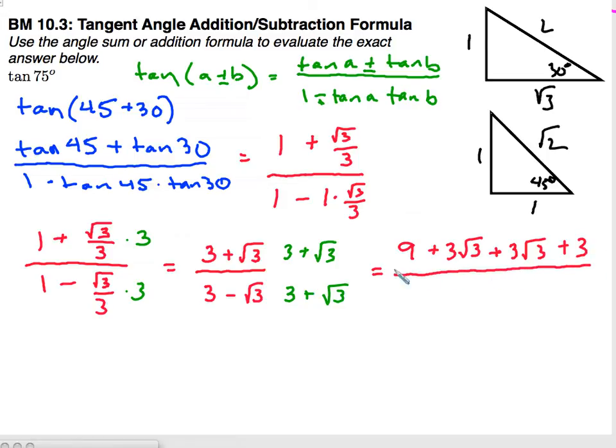All over, foil that, you get 9 plus 3 square root of 3 minus 3 square root of 3. And then a negative square root of 3 times the square root of 3 is negative 3. And all of that simplifies to 12 plus 6 square root of 3, all over 6.